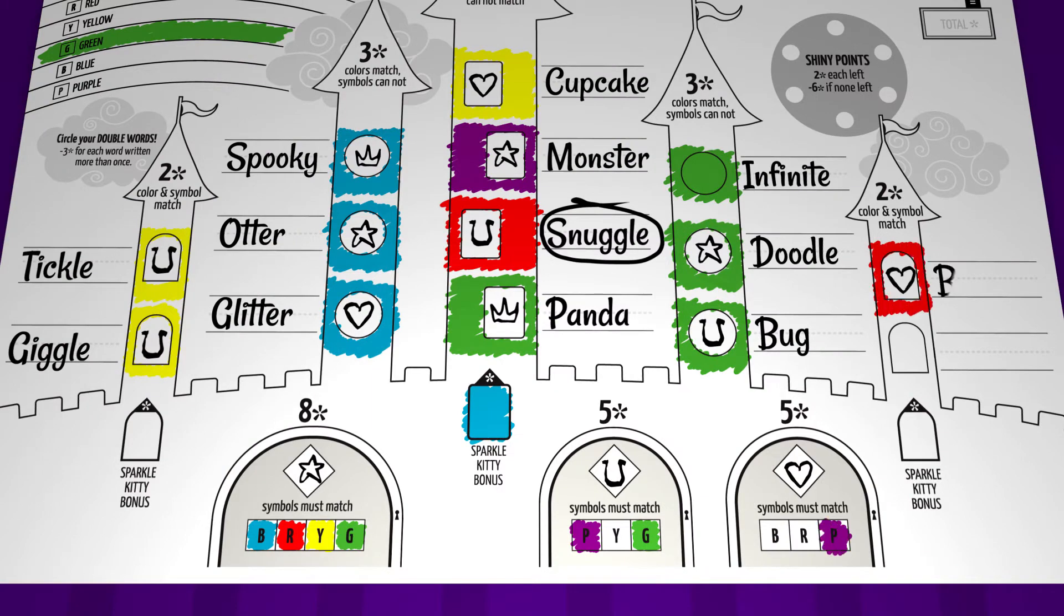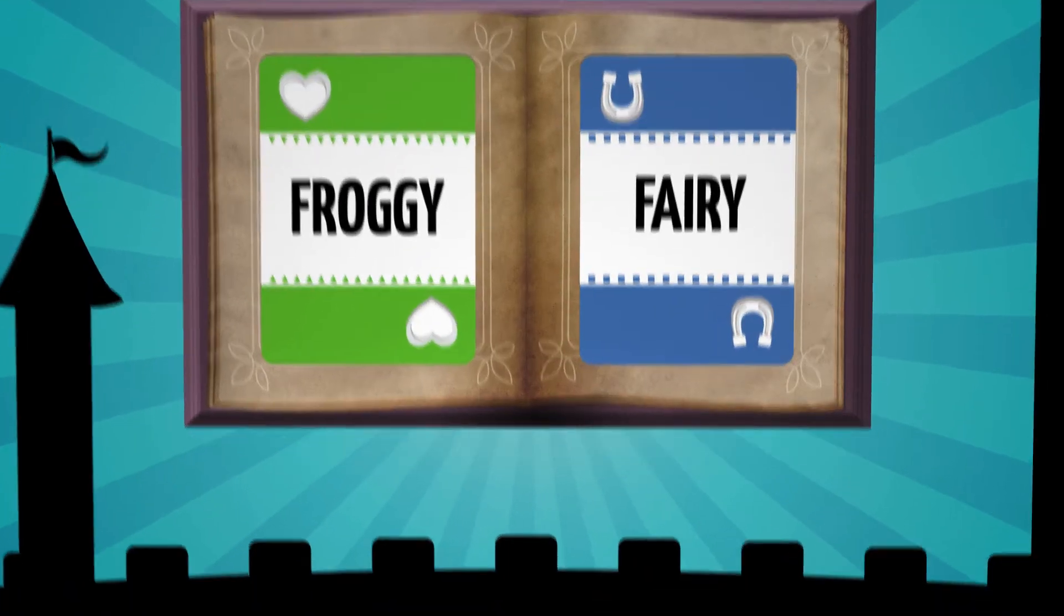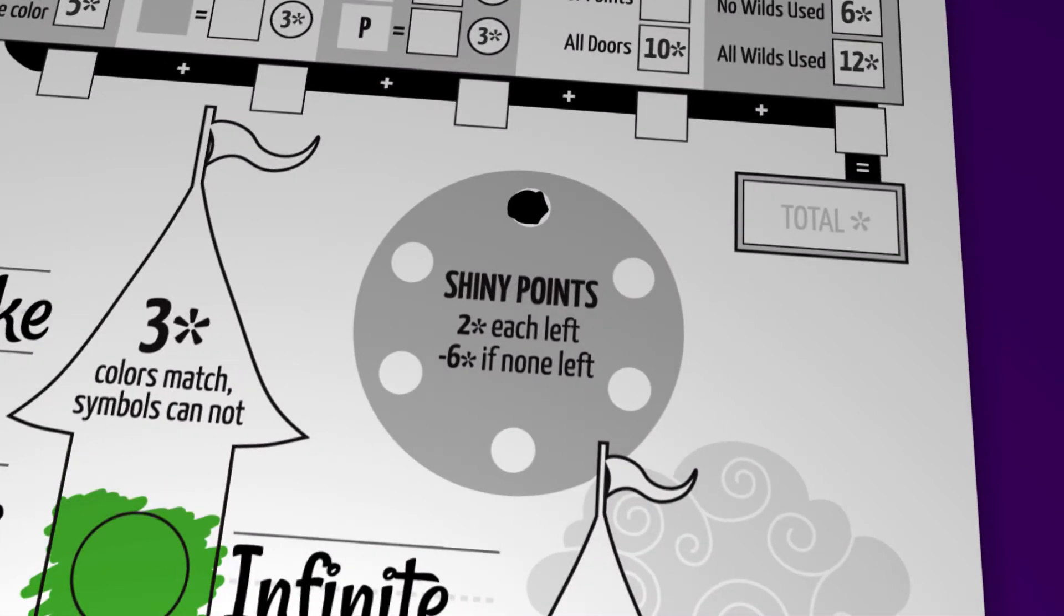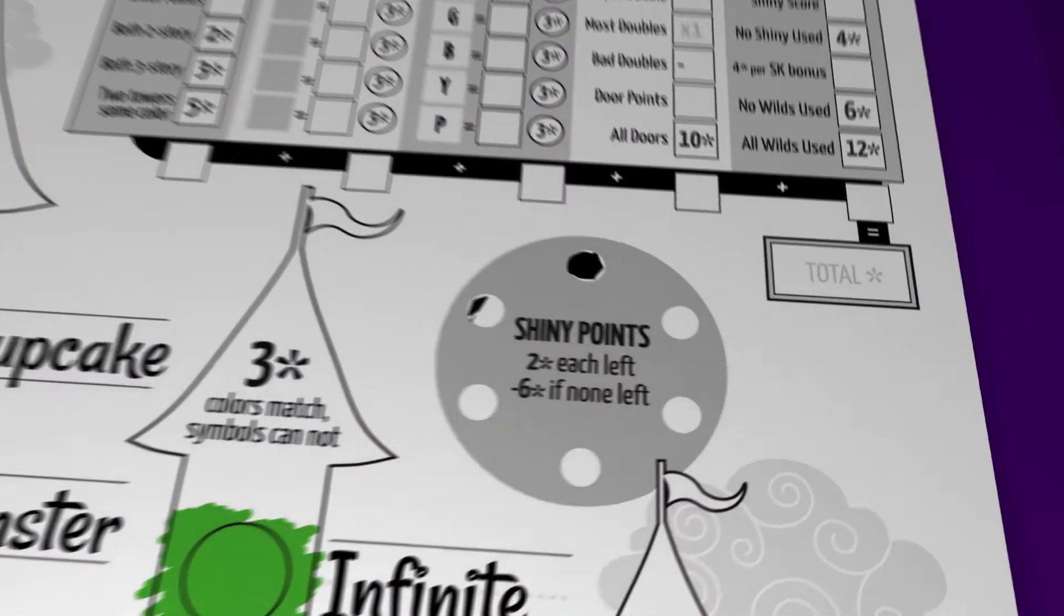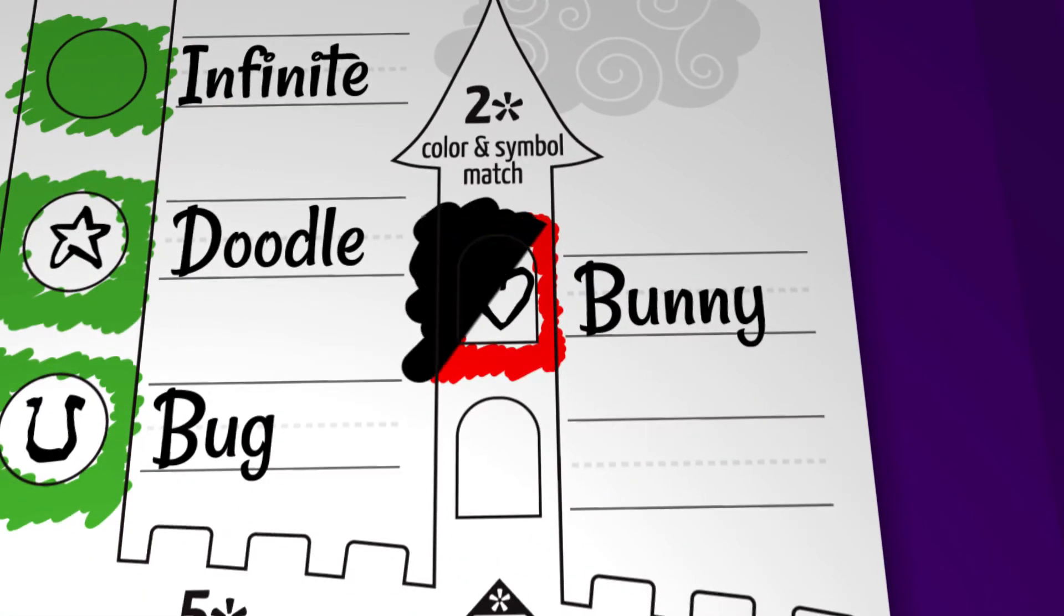As you fill out your kingdom sometimes you will not be able to use either spell card on your turn. When this happens you lose a shiny point and must mark it off the shiny moon. Using a dark magic card requires a player to lose and mark off a shiny point as well, but this allows you to black out a section of a tower that was previously filled in. The space no longer counts for or against the tower rules.